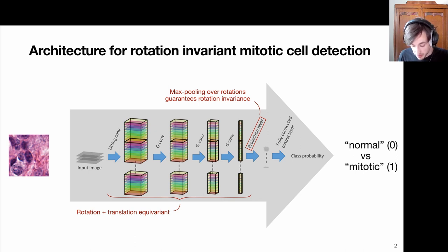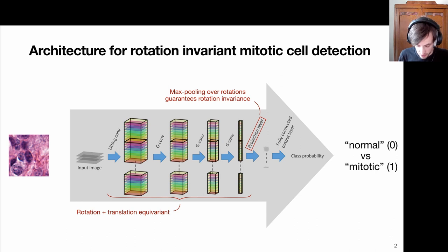That leads to the fact that in the end we've shrunk this patch to just a single pixel and all the orientations. Then we pool over this to obtain just a single feature vector that represents the entire patch under all possible rotations. Let's see what it looks like in practice.